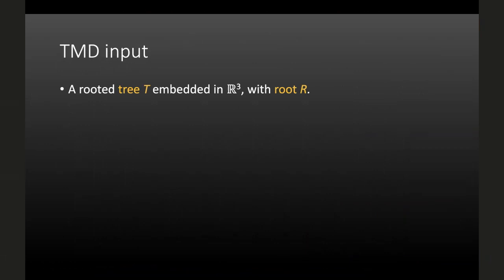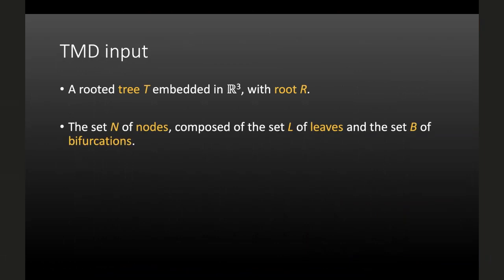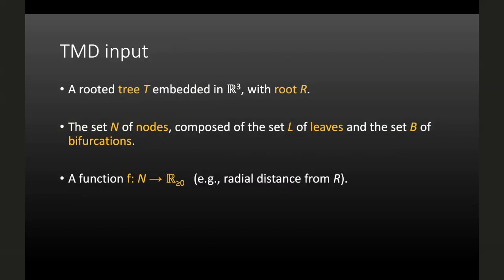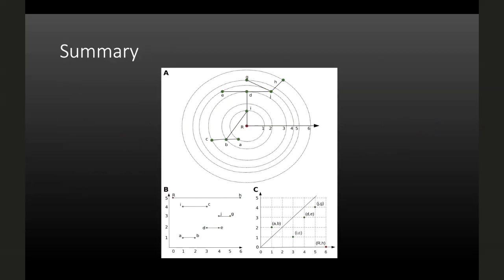The input to the TMD is a rooted tree embedded in R³, where we fix the root, and the set of nodes consists of leaves L and bifurcation points B. In neurons, essentially all branching is binary bifurcations. We assign a non-negative real number to each node — typically radial distance from the root, though path distance and other variants can also be used. Starting from the node furthest out, at each bifurcation we break off the shorter branch as a bar and continue with the longer. Most points in the resulting persistence diagram lie below the diagonal, except for branches that bend back.